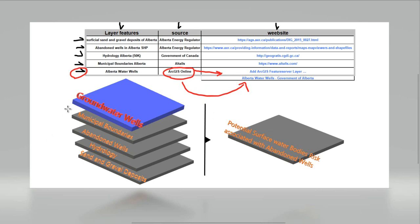In order to do the geospatial analysis, we are going to compile the information between these four layers and create a new layer: the potential surface water bodies risk associated with abandoned wells. We are going to use the municipal boundaries to work in a specific municipality and know its shape and borders. Then we use the abandoned wells to know the location of wells associated with oil and gas activity — those are going to be the potential source of contamination.